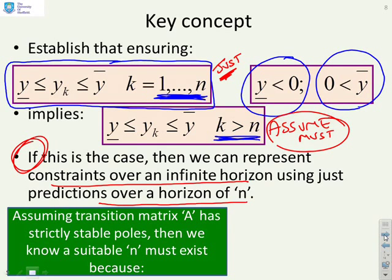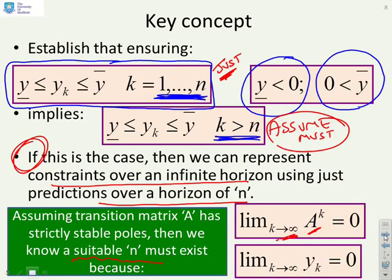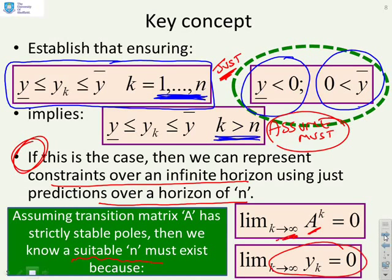Well, if you assume that your transition matrix A has got strictly stable poles, which it must have for sensible predictions, then we can easily prove that a suitable n must exist. And the reason we can do that is we can say the limit as k goes to infinity of a to the power of k is 0, and therefore the limit as k goes to infinity of yk is 0. Now because I've put these two limits here, you can see that y under bar is strictly left than 0 and y over bar is strictly greater than 0.